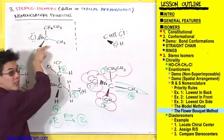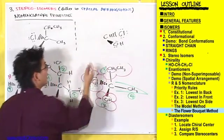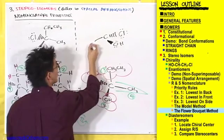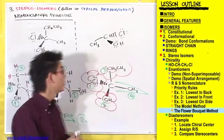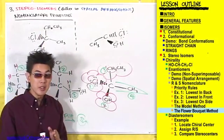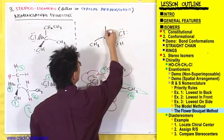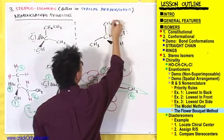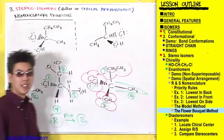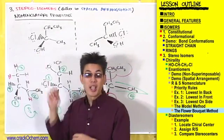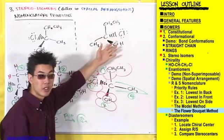Next, we have a CH3 pointing to the right, so in the enantiomer we're going to have a CH3 pointing to the left. And lastly, we have an ethyl group pointing straight up, so its mirror image will also have an ethyl group pointing straight up. So all we did was take this compound and flip everything from right to left and left to right, and that gave us the mirror image.